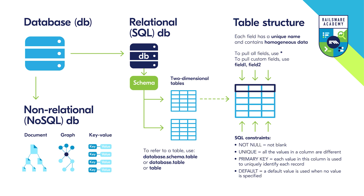Other common constraints include: UNIQUE, which ensures all values in a column are different; PRIMARY KEY, where each value uniquely identifies each row or record — for example, a user ID; and DEFAULT, which provides a default value for a column when none is specified.